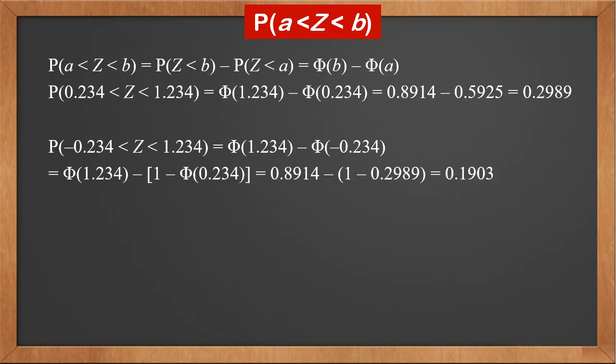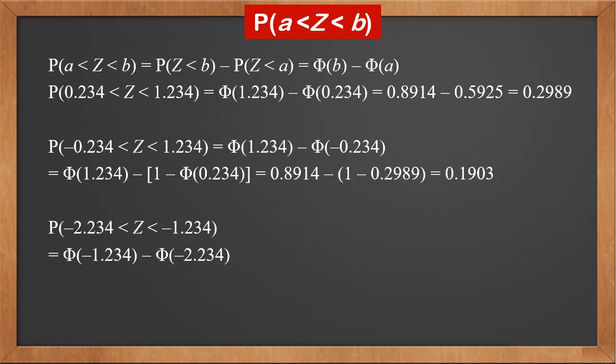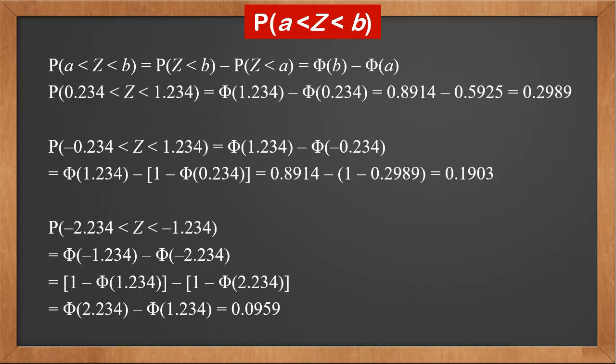If Z is between two negative values, we apply phi(-z) = 1 - phi(z) on both. For example, P(-2.234 < Z < -1.234) = phi(-1.234) - phi(-2.234) = (1 - phi(1.234)) - (1 - phi(2.234)) = phi(2.234) - phi(1.234) = 0.0959.